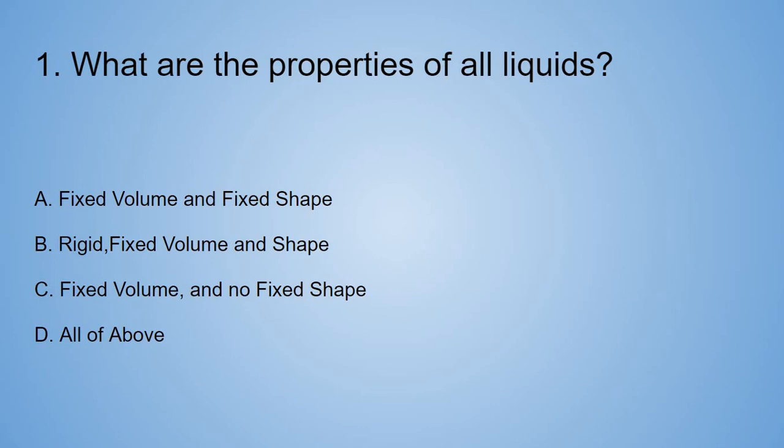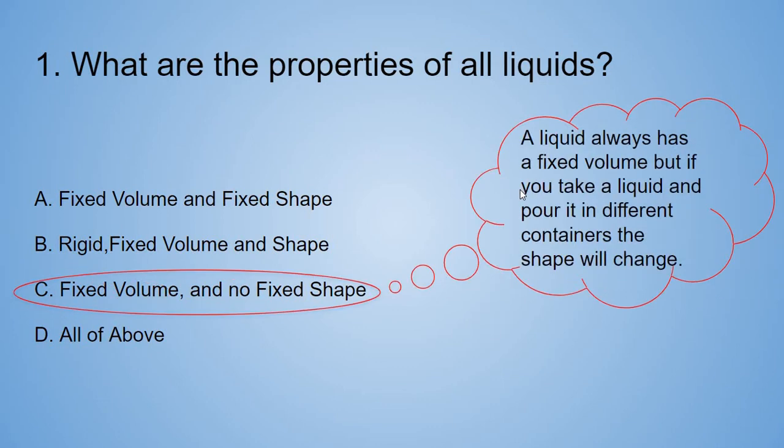Did you get the answer? Good! The answer is C. Fixed volume and no fixed shape. A liquid always has a fixed volume. But if you take a liquid and pour it in different containers, the shape will change.